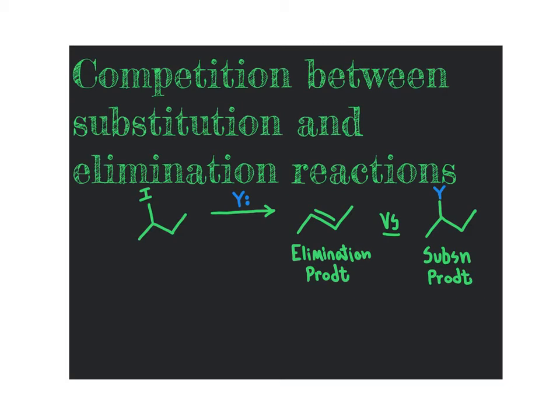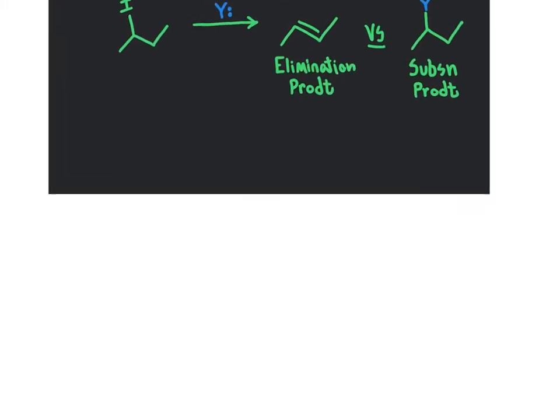These two reactions — the two pathways toward substitution using an SN1 or SN2 route and elimination using an E1 or E2 route — are in constant competition with one another. Under typical circumstances the substitution reaction usually wins and dominates. What situations will result in favoring the elimination pathway to give an alkene over substitution? That's what we're going to talk about in this segment: the criteria that will lead to favoring the elimination product over the substitution product.